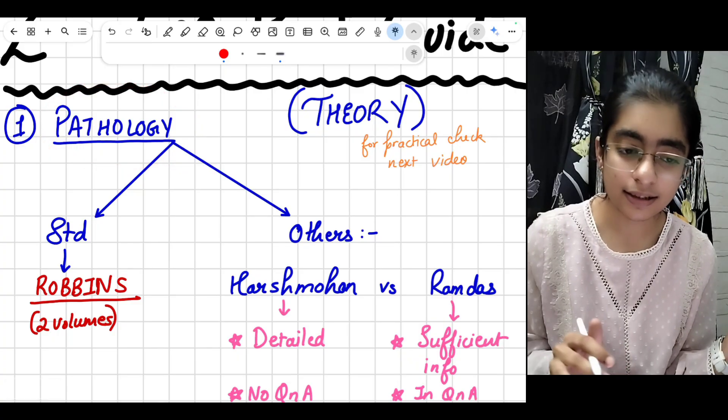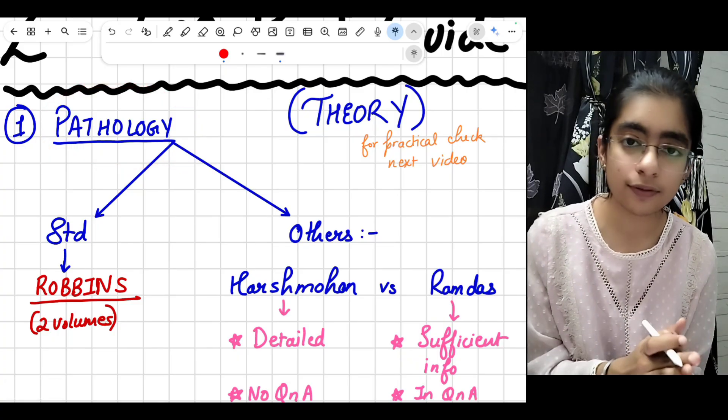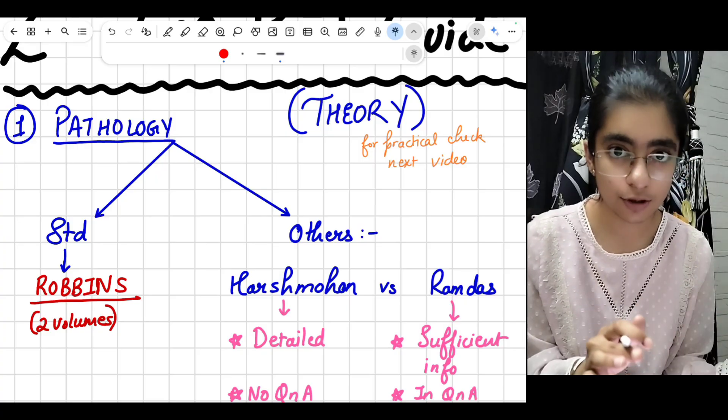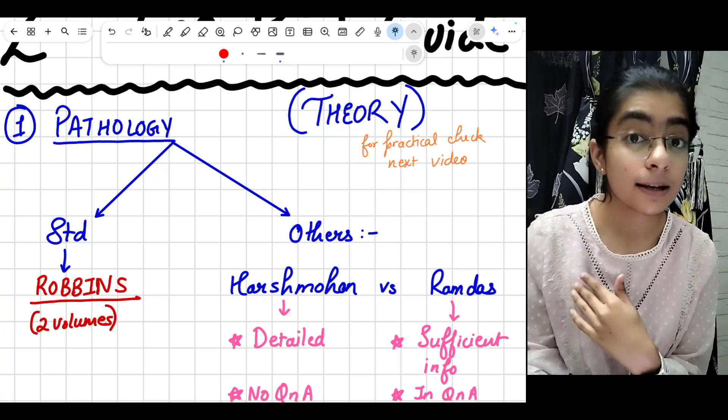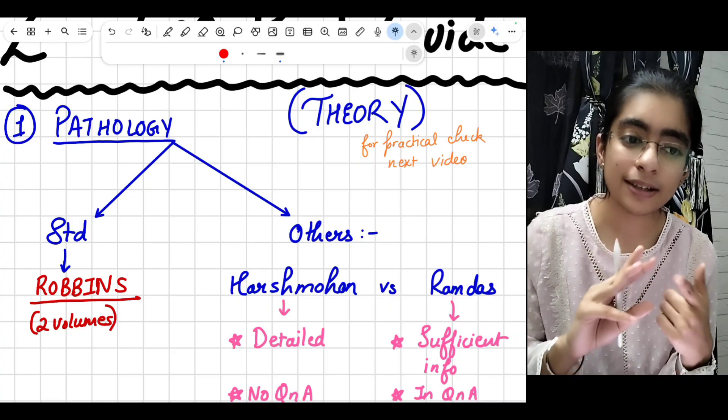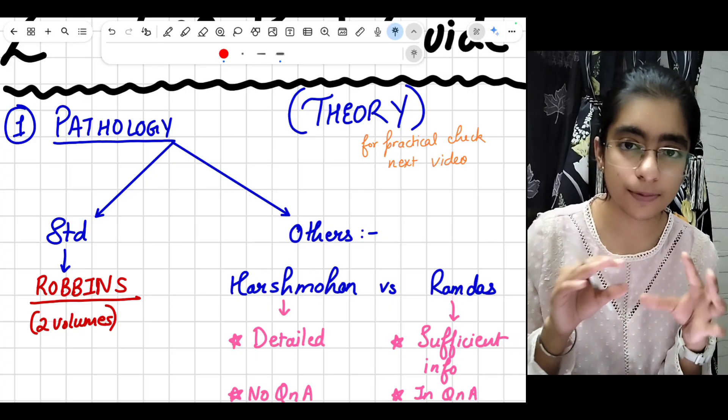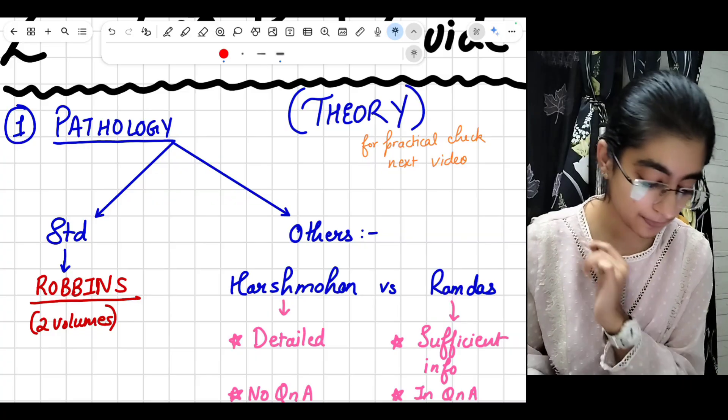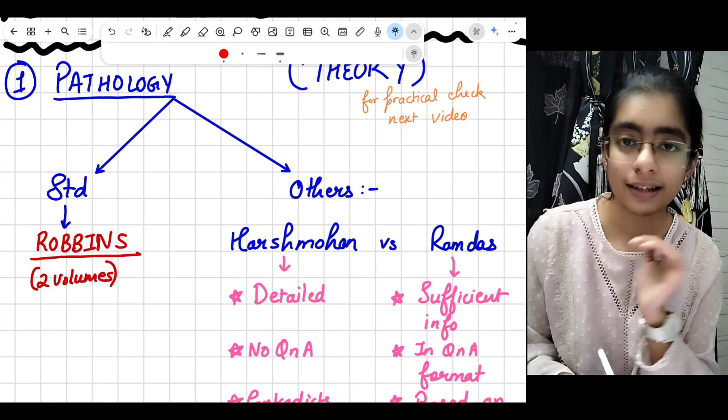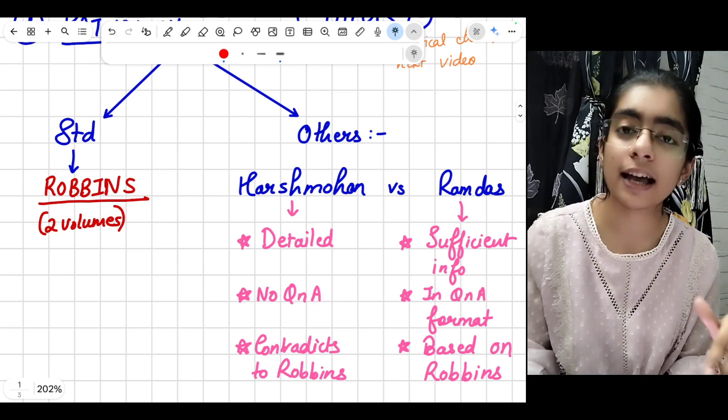Pathology is an introduction of the subject for you. Like you studied anatomy, it was normal human body, right? Now it is the abnormal things. You will require both anatomy and physiology knowledge for pathology. In pathology, first we have the standard book Robbins. Everyone knows, I think.